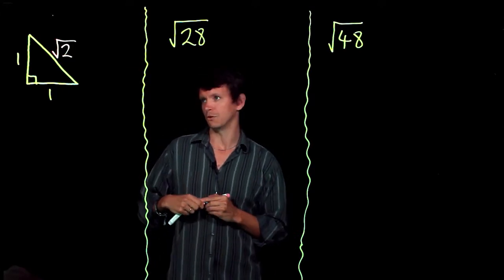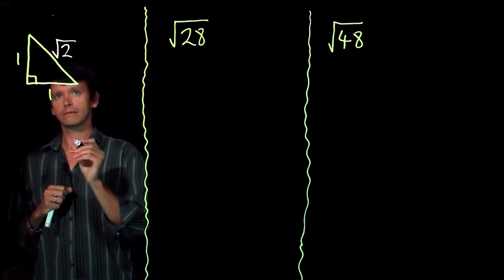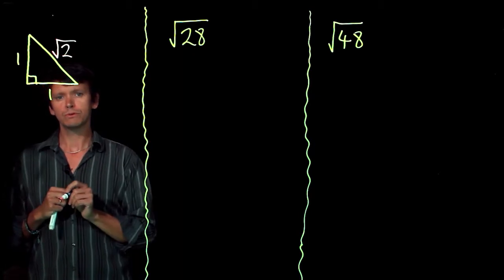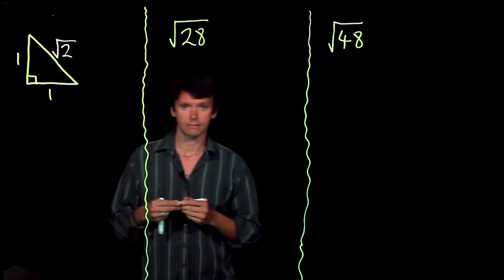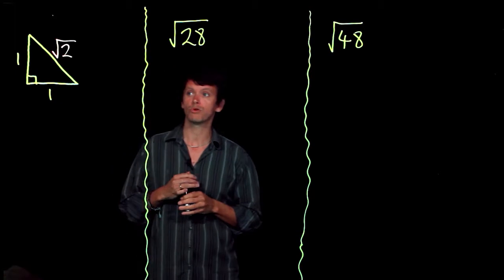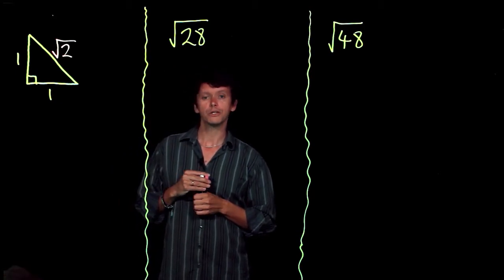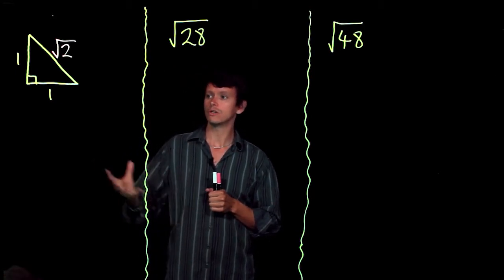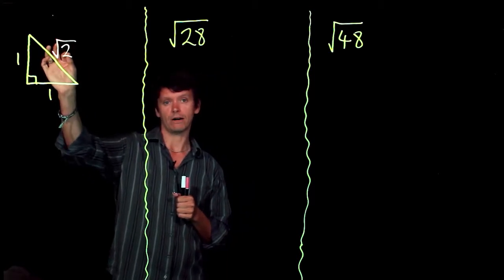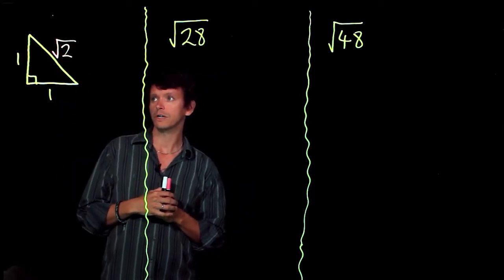So surds are really useful for one reason, that when you write root 2 it's accurate. It's absolutely correct. You haven't approximated at all. They're useful for another reason in that you can write your answer without the need for a calculator. So they're useful for those two reasons.